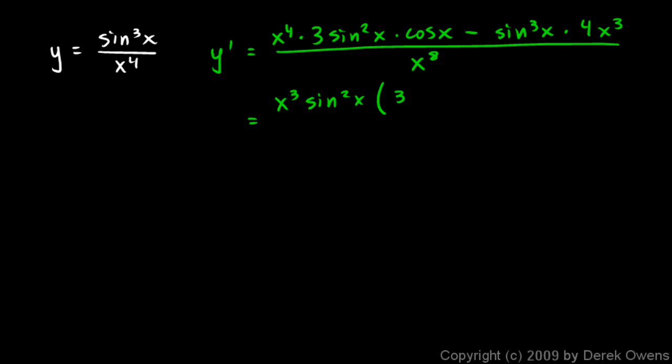So let's just factor out the x cubed sine squared x. And that leaves us with a 3x cosine x minus 4. And the x cubed is gone, and two of the sines are gone. So we're just left with 4 sine x. And all of this is over x to the eighth.